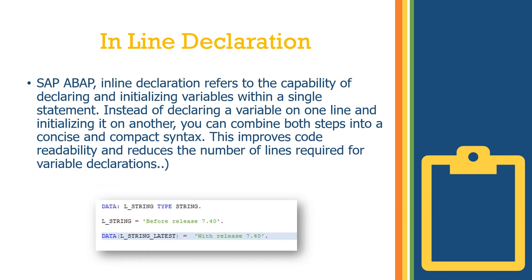The below is a sample example for the same. As you can see, the last line — DATA l_string_latest — this is how at runtime the data gets declared. The l_string_latest gets declared at runtime and it is initialized with the text 'with release 7.4'.